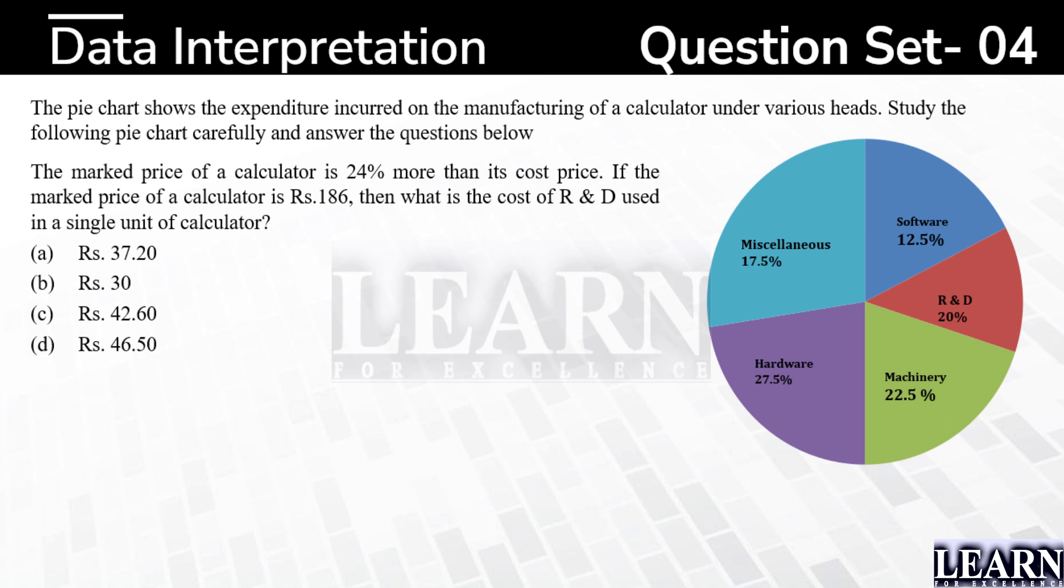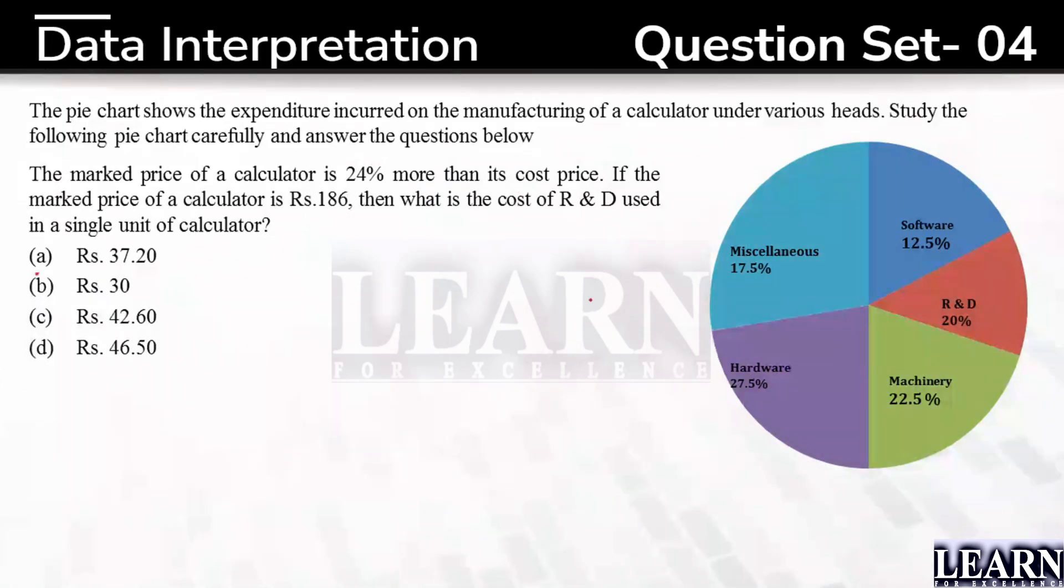So here they are told this pie chart is nothing but the expenditure incurred on the manufacturing of the calculator. Can you see, this is talking about a cost price. The cost incurred is this pie chart, and the total percentage is 100%. Now they are told the marked price of the calculator is 24% more than its cost price.